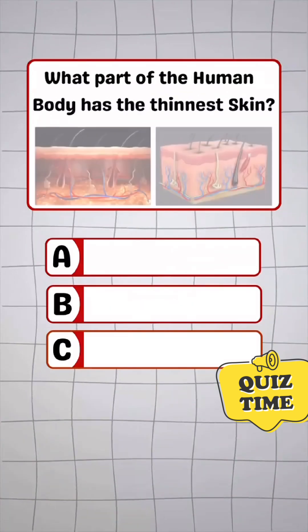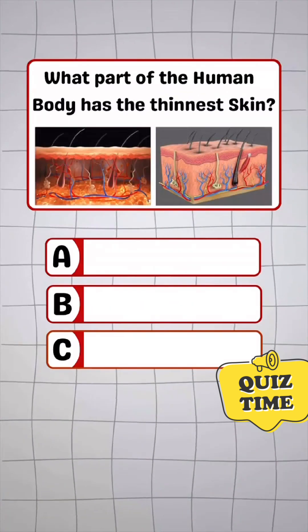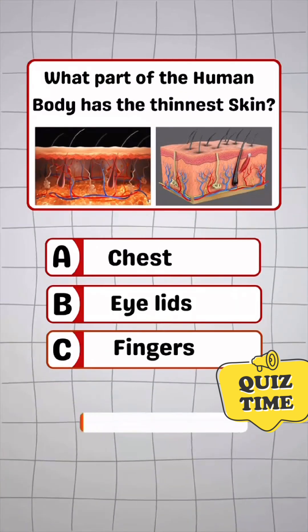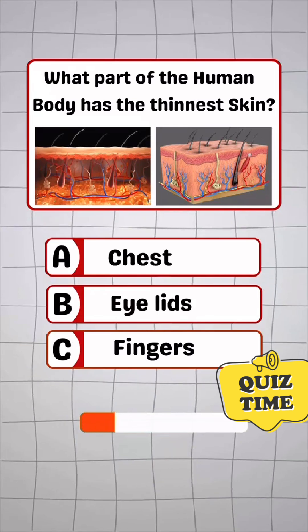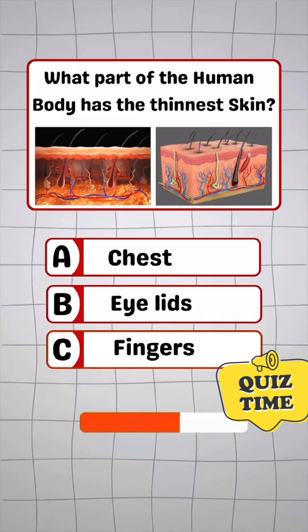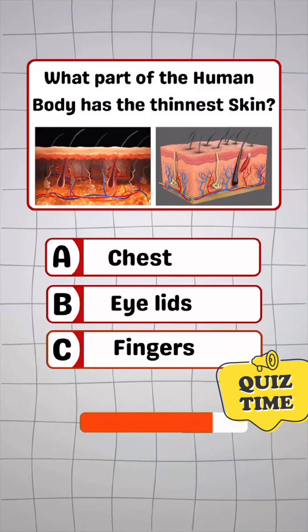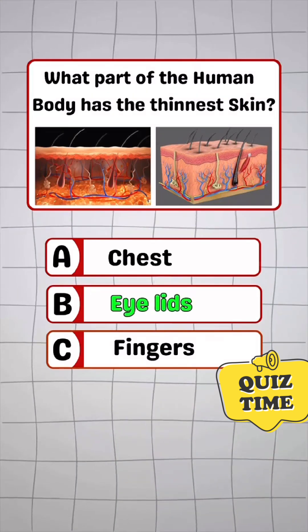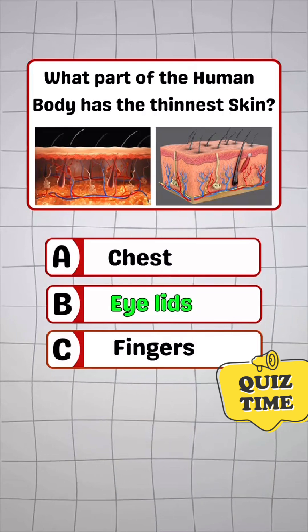Question 3. What part of the human body has the thinnest skin? Answer B: Eyelids.